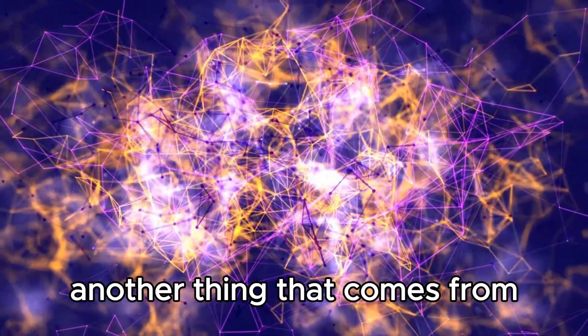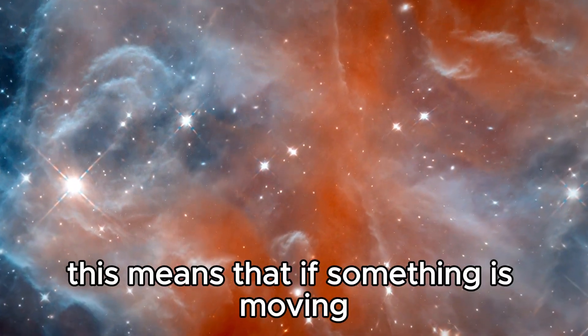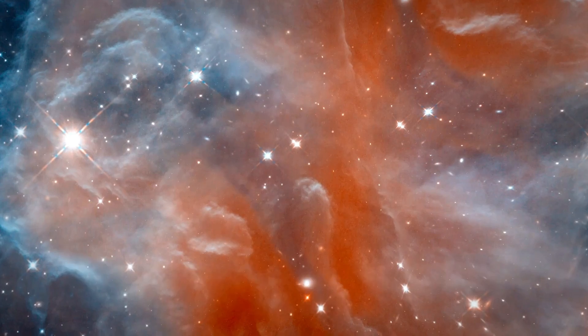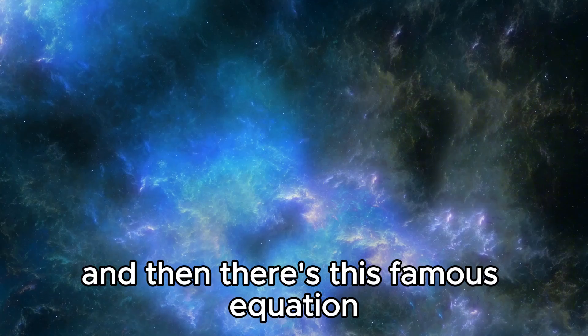Another thing that comes from this special way of looking at things is length contraction. This means that if something is moving, it looks shorter in the direction it's moving when you look at it from a spot that's not moving.